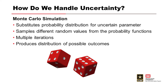To better understand our uncertainties, we perform Monte Carlo analysis. Monte Carlo simulation performs risk analysis by building models of possible results, substituting a range of values — a probability distribution — for any factor that has inherent uncertainty. It then calculates results over and over, each time using a different set of random values from the probability functions. Depending on the number of uncertainties and ranges specified, a Monte Carlo simulation could involve thousands or tens of thousands of recalculations. The simulation produces distributions of possible outcome values, and each iteration represents a scenario that could occur given the data uncertainties in the model.